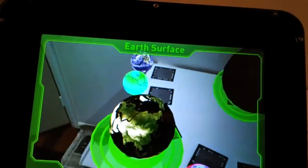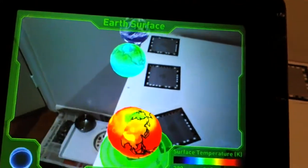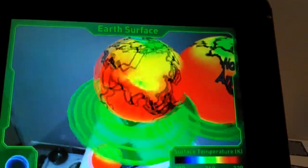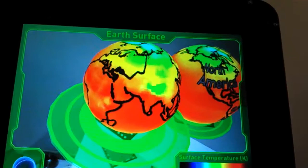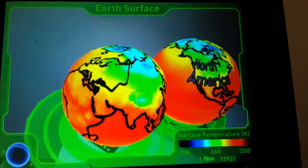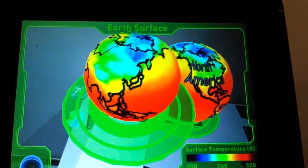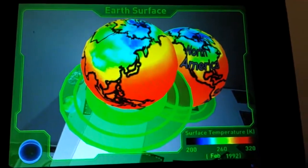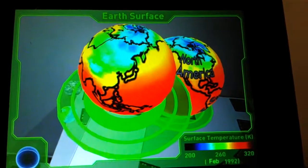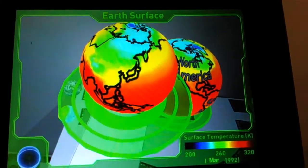Again using the same interface we can pick up a version of the Earth and you can see the continents outlined and in this case its surface temperature. You can see the surface temperature of that part of the Earth and it's animating through a one year cycle. You can see the month in the bottom corner of the screen.